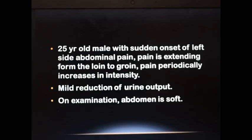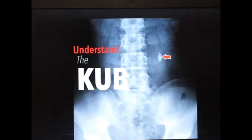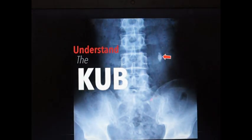The case is about a 25-year-old man who came to a physician with complaints of left side abdominal pain. The pain is extending sharply from loin to groin — that is, from the posterior side of the abdominal wall to anteriorly medial towards the inguinal ligament. This radiating pain was increased periodically, and there was a mild reduction in urine output. On examination, the abdomen was soft. An x-ray was taken — a plain x-ray anterior-posterior view of the abdominal pelvic region to view for any renal stones.